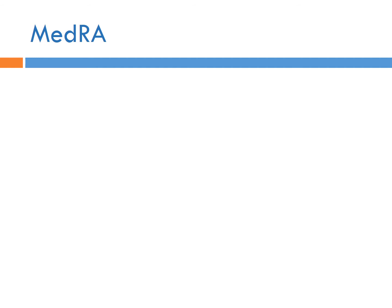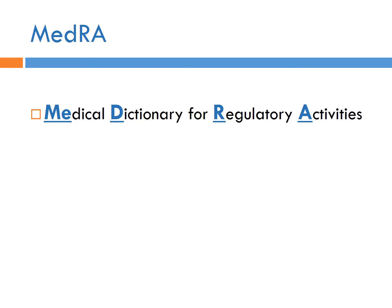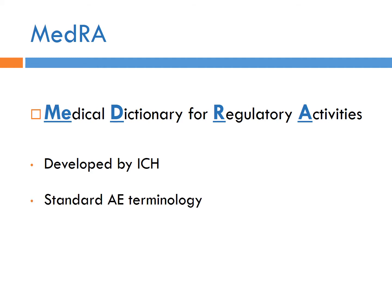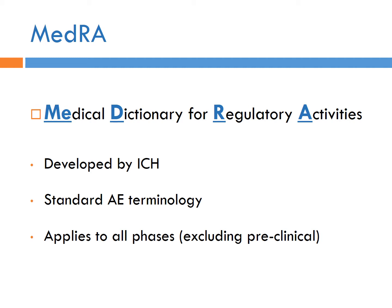Once we decide a medical finding is an adverse event, how do we talk about it? We use very specific language set forth in MedDRA — the Medical Dictionary for Regulatory Activities. It's developed by ICH, and it creates standard terminology for adverse events. If I'm a sponsor with 30 investigators across the country, I want them all to use the same language to describe adverse events. If the same adverse event is described with 22 different words across 30 sites, it becomes very confusing to categorize things — and eventually I need to tell the FDA what happens when someone takes this medication.